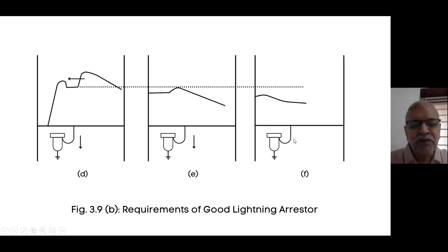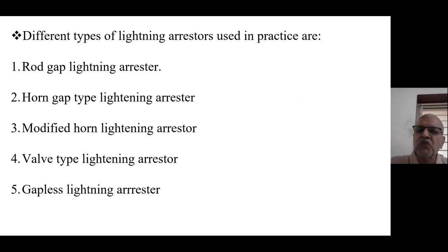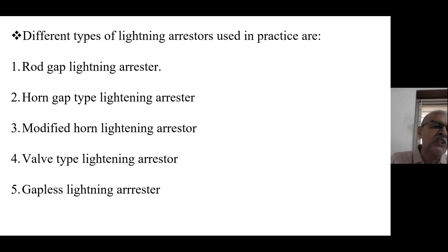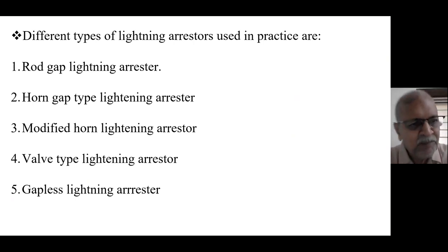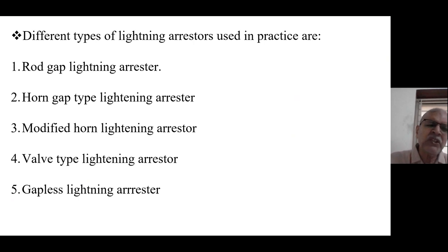The different types of lightning arrester are: horn gap type lightning arrester, modified gap type lightning arrester, and gapless lightning arrester. We will see rod gap, horn gap, and modified horn gap.